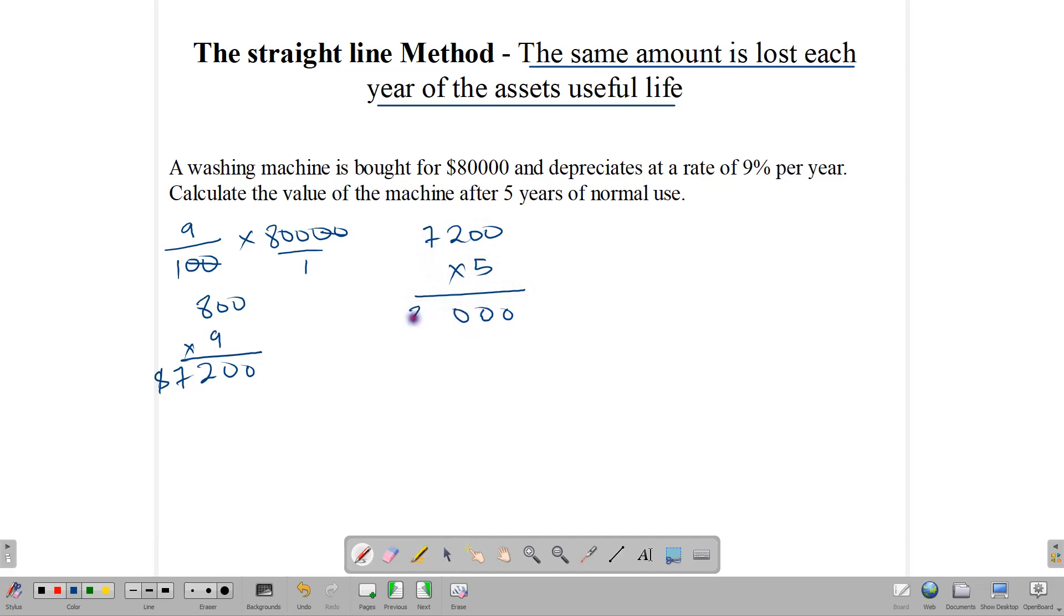So in five years' time, the machine is going to be losing $36,000 worth of its value. So what will be its value after the five years? We'll have to take the $80,000, which is the original purchase value, and subtract that $36,000 from it. So in doing that, we end up with $44,000. So this would be the value of the washing machine after five years. And this is using the linear or straight line method. It loses the same amount of money each year.